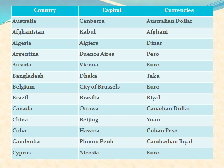Australia: its capital is Canberra and its currency is the Australian dollar. Afghanistan: capital is Kabul and currency is Afghani. Algeria: its capital is Algiers and currency is Dinar. Argentina: its capital is Buenos Aires and currency is Peso.